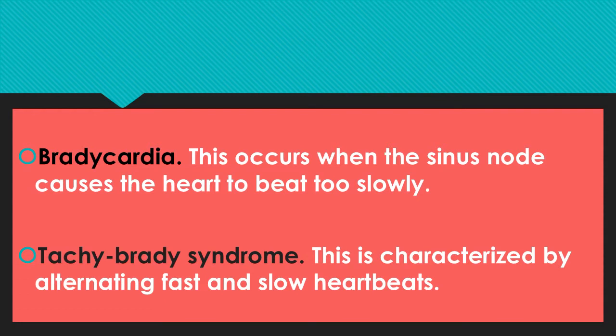Indication — bradycardia: this occurs when the sinus node causes the heart to beat too slow, less than 60 beats per minute. Tachybrady syndrome: characterized by alternating fast and slow heartbeats. Some patients may have heart rate fluctuating from tachycardia — 140 or 160 — suddenly dropping below 40 or 60. This type of patient requires monitoring and will also need a permanent pacemaker.